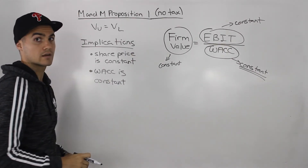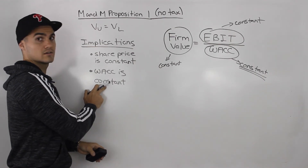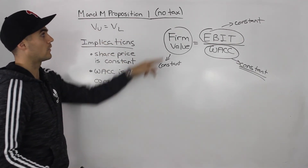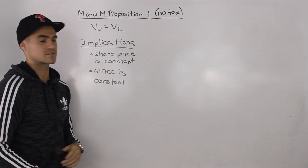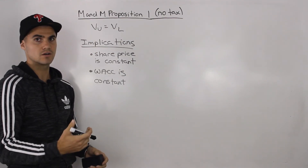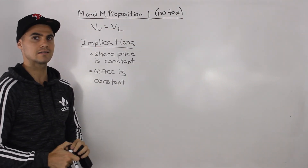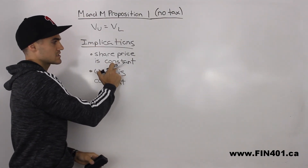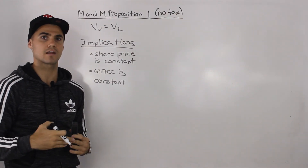We'll further expand on that in future videos and examples. For now, write down that the weighted average cost of capital is constant for any firm — the WACC of an unlevered firm is the same as the WACC of a levered firm when dealing with no taxes. That's another implication of M&M Proposition 1 and basically everything you need to know for it in the no-tax case. In the next video, we'll go over M&M Proposition 2 with the no-tax case, which deals more with the equity portion of a firm. The share price is constant, but the risk is not necessarily constant between an unlevered and levered firm — and that's what Proposition 2 expands on.